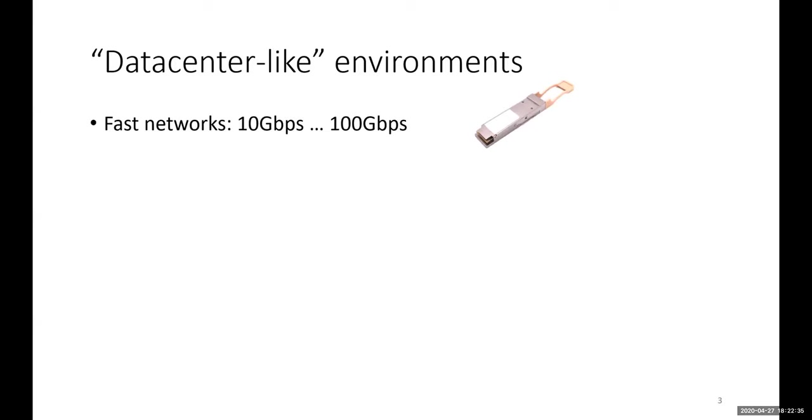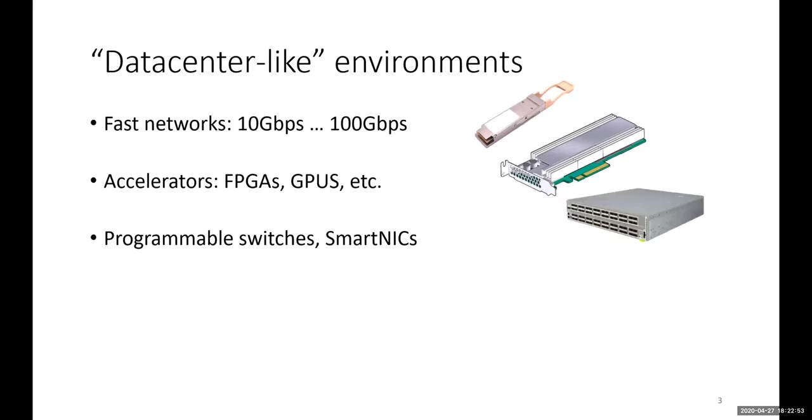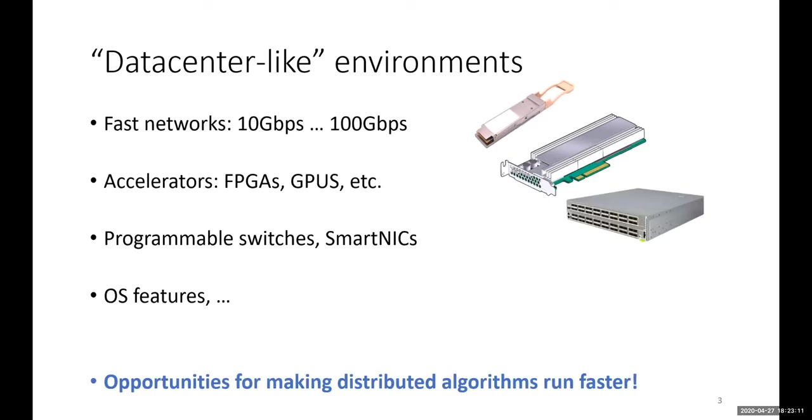In the clouds, 10 gigabit networking is standard these days, but 40 and 100 gigabit is coming. As we heard before, there's a wide variety of accelerators and specialized hardware available to most cloud users. Infrastructure is getting smarter with programmable switches and smart NICs, and in cloud settings, service providers have more control over deployment, enabling advanced OS features. This leads to exciting opportunities to make BFT consensus faster by leveraging these different features.